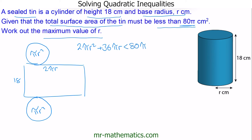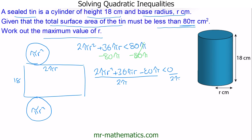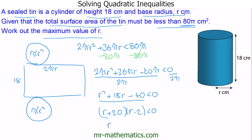Next we make the right hand side equal to 0 by subtracting 80π from both sides. So we have 2πr² plus 36πr minus 80π less than 0. Factorizing out 2π from both sides gives r² plus 18r minus 40, which is less than 0. We can factorize the left hand side as (r plus 20)(r minus 2). So our roots are r equals negative 20 and r equals positive 2.